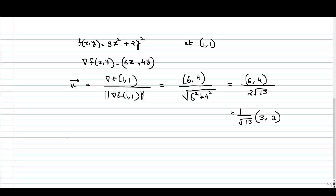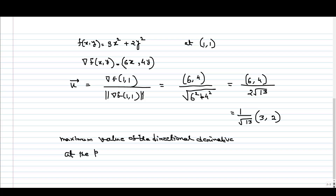And what will be the value of the maximum directional derivative? This is basically the norm of the gradient at that point. The maximum value of the directional derivative at the point (1,1) is the norm of grad f(1,1), which we have already calculated as 2√13. So this is the maximum value of the directional derivative, and it is in the direction (1/√13)(3, 2).